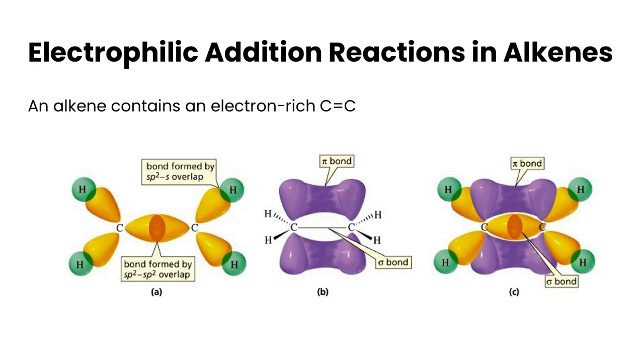To start off, we first need to refresh our memory about the structure of alkenes. Alkenes contain a carbon-carbon double bond, and this double bond is formed by an end-to-end overlap between two sp2 hybridized orbitals. The second bond, the pi bond, is an overlap between two p orbitals that are side to side.